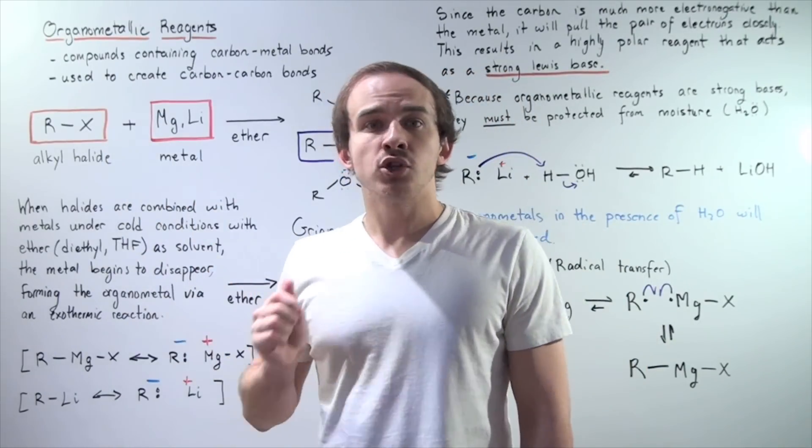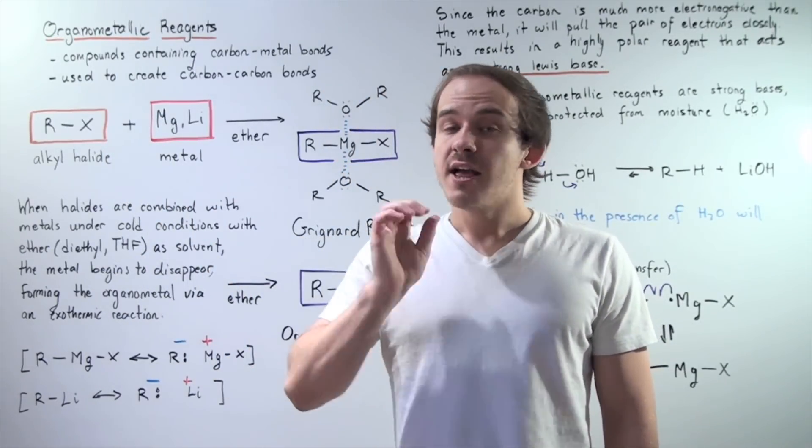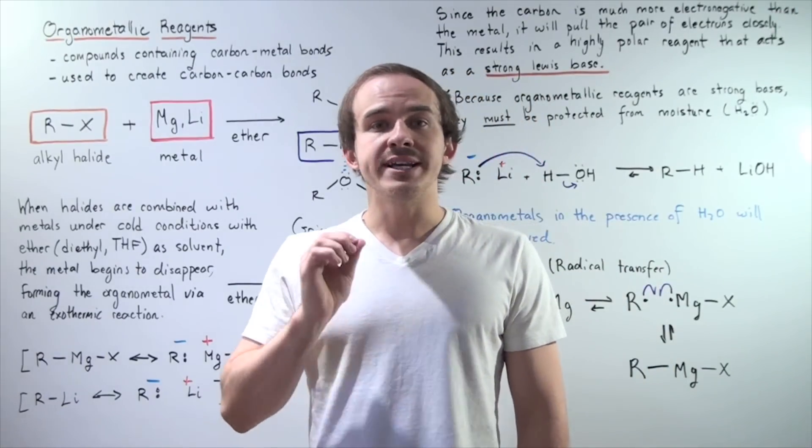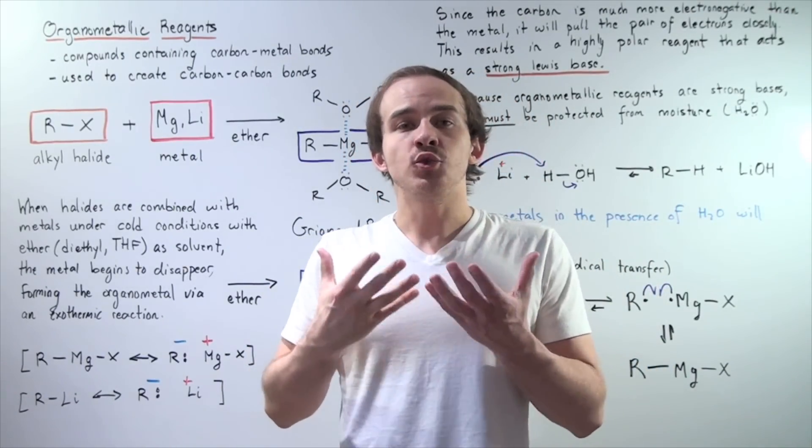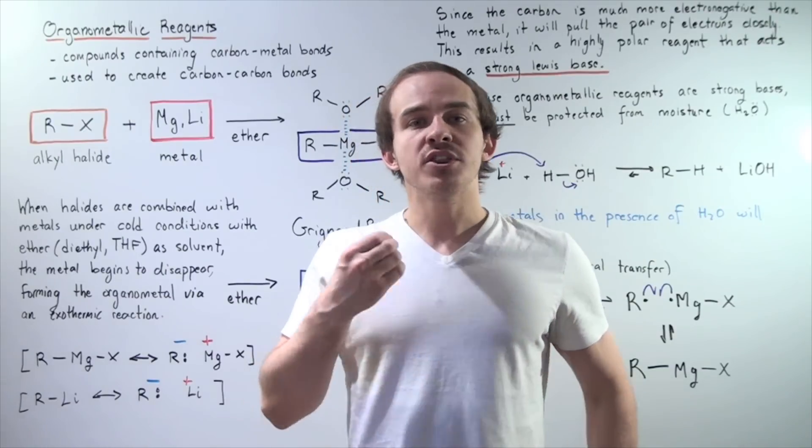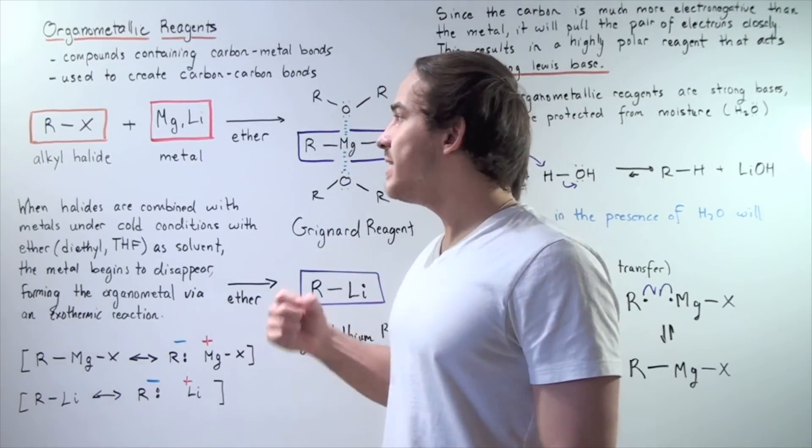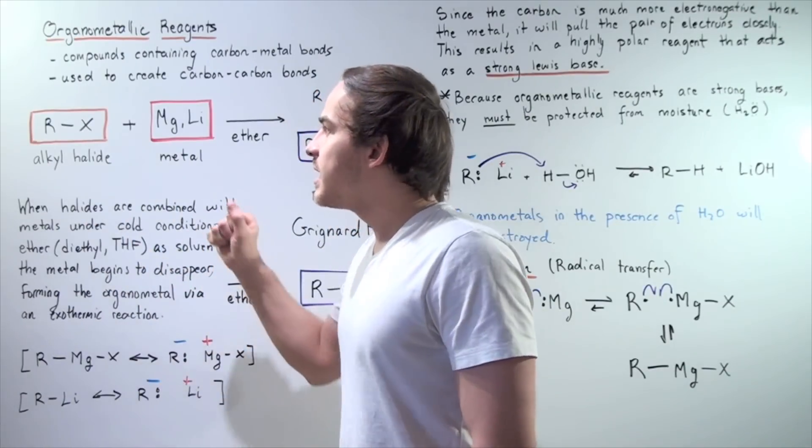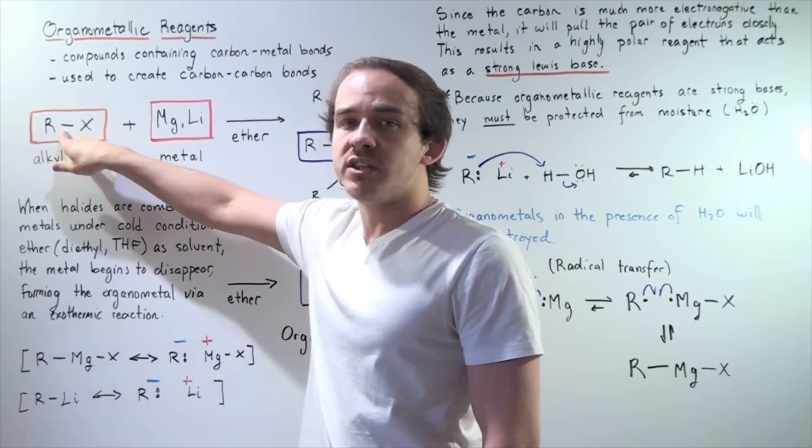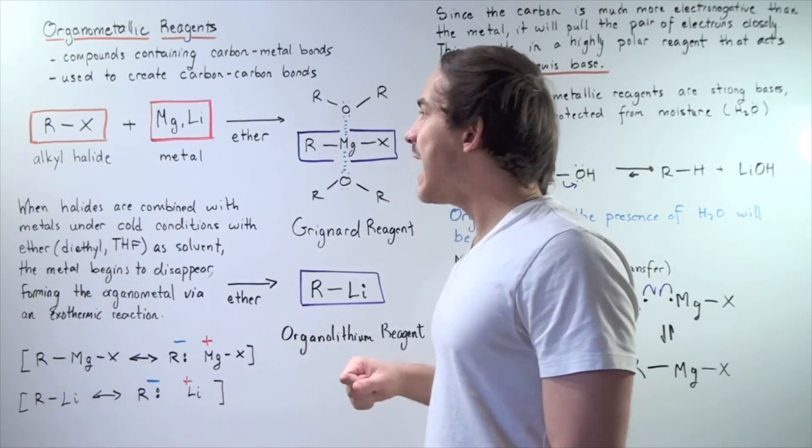So the X can either be chlorine, bromine, or iodine. That's because fluorine is very electronegative, and it binds very tightly. It creates very strong bonds with carbon atoms. So that means if we use fluorine, this reaction won't readily take place because this bond will not break.